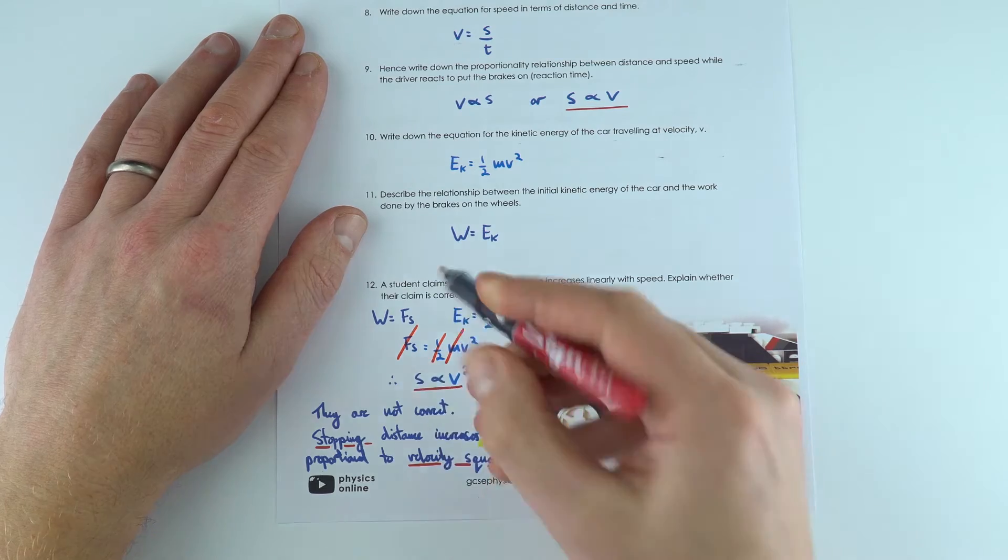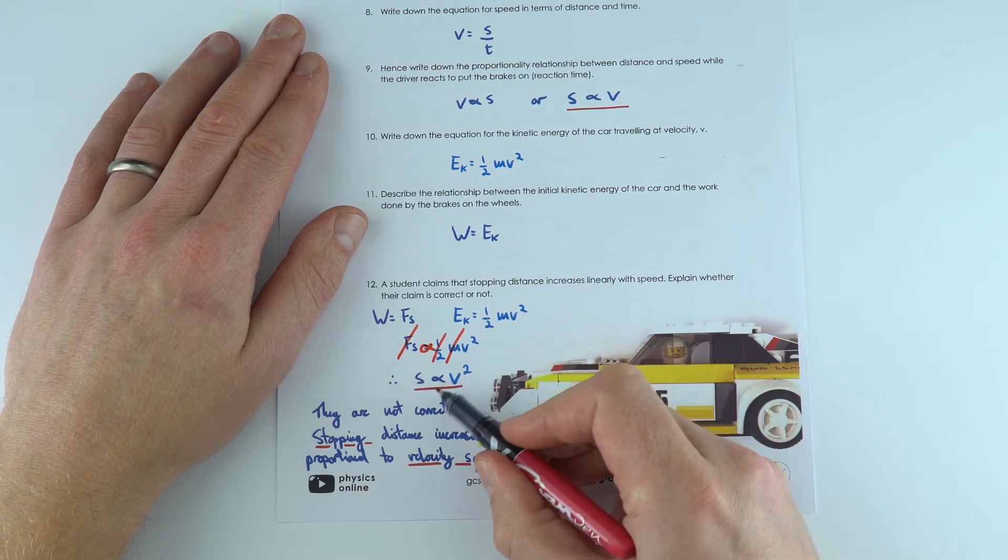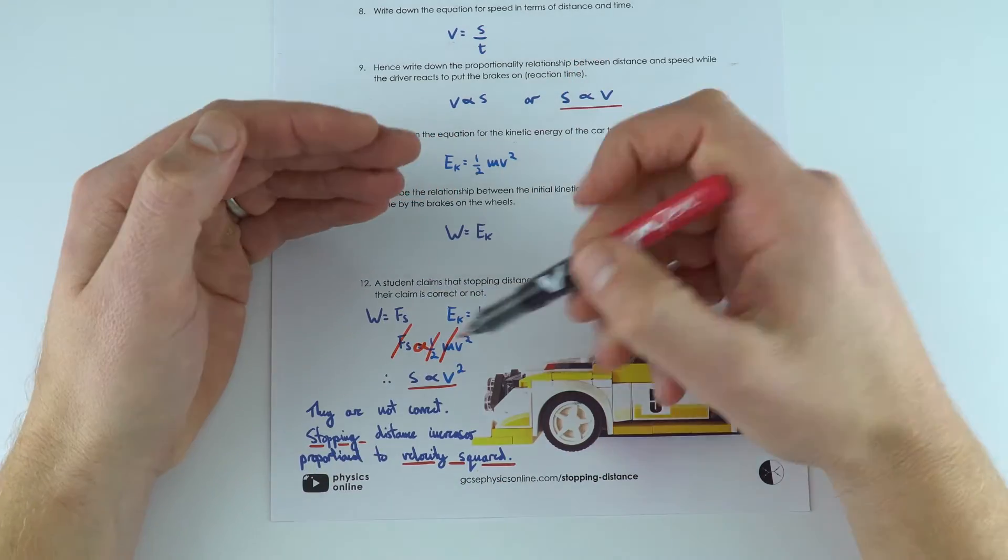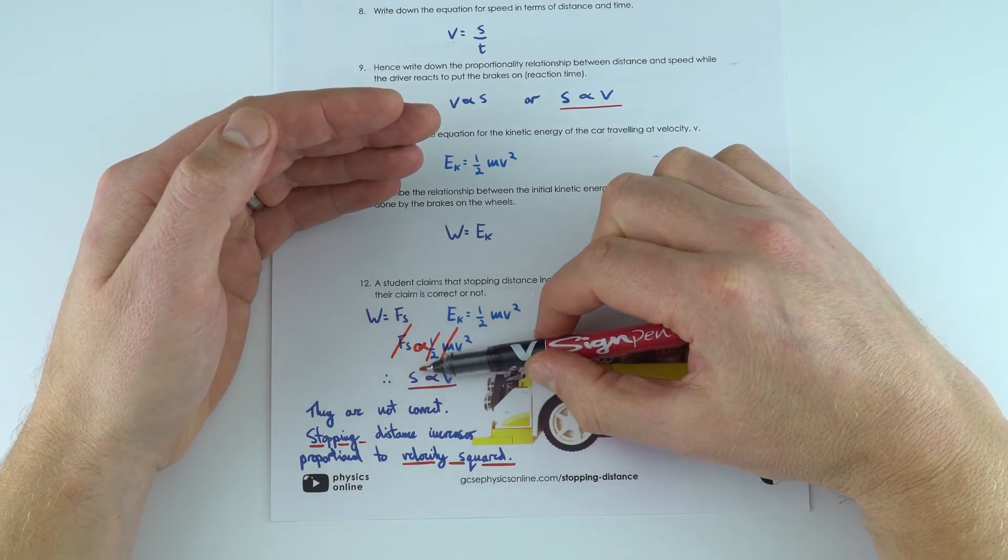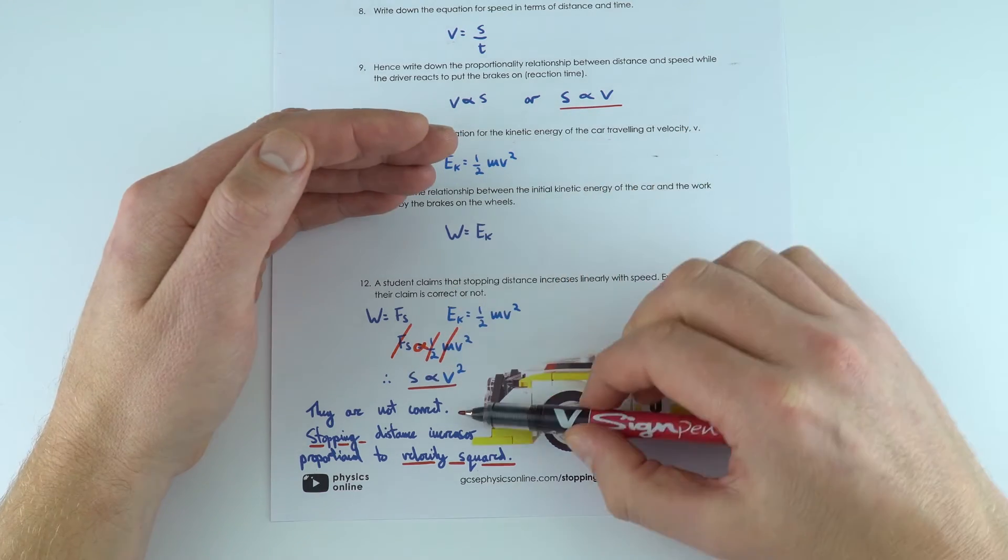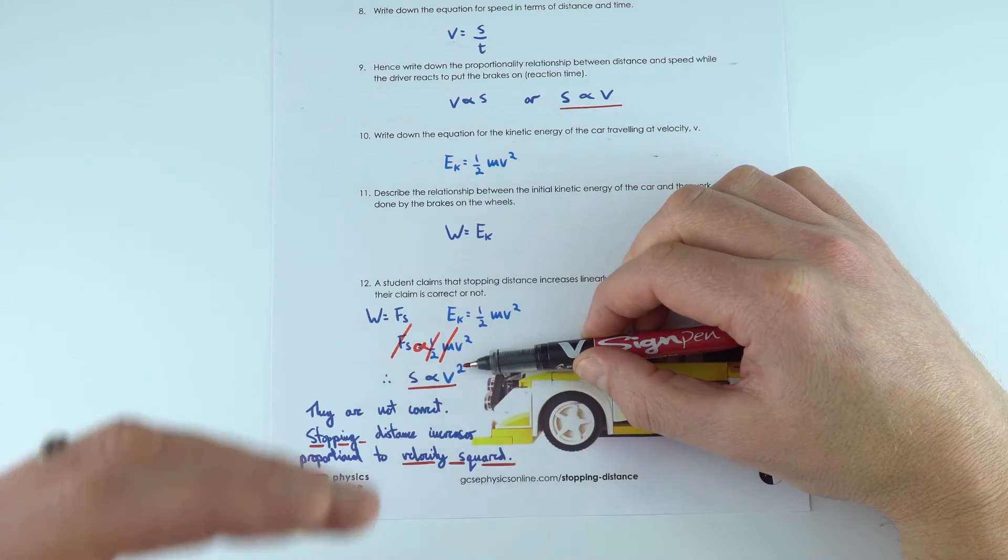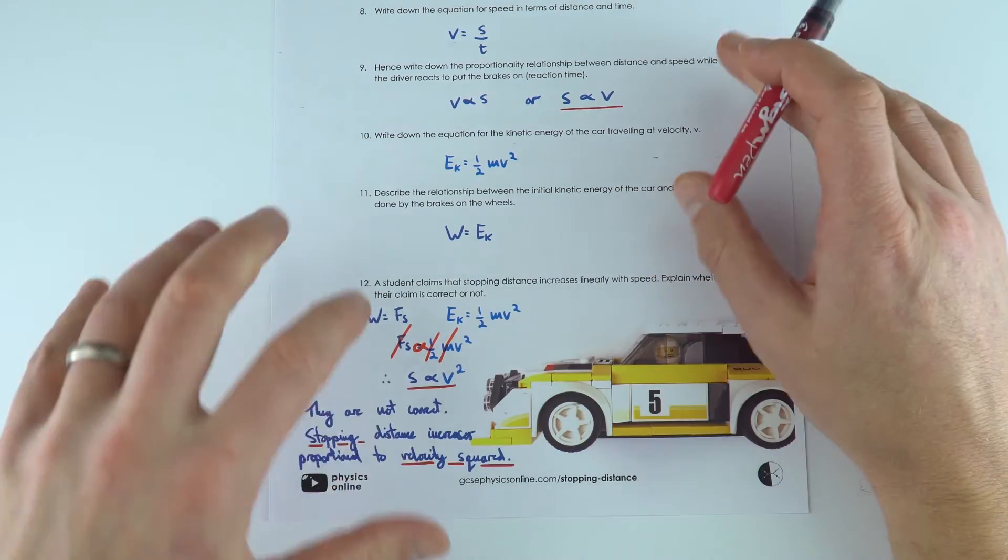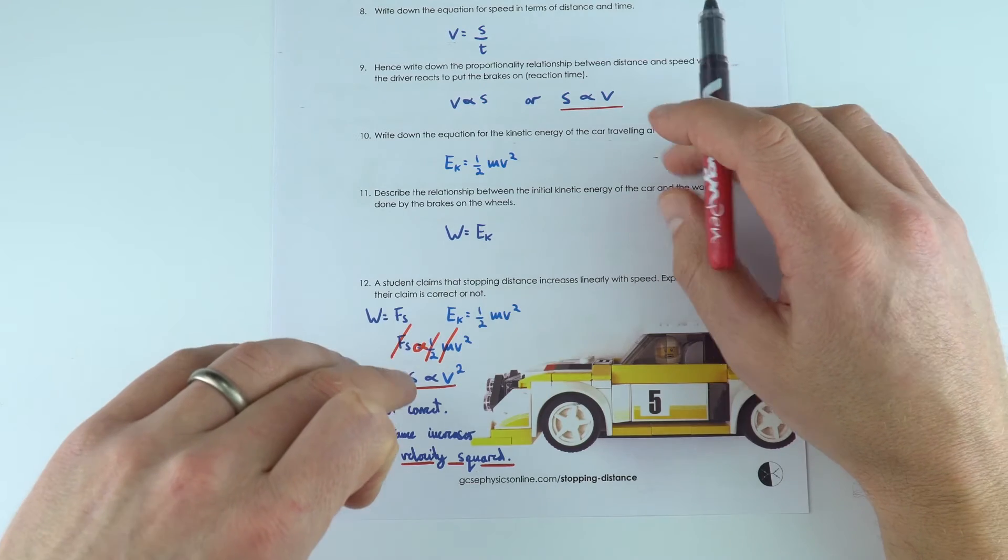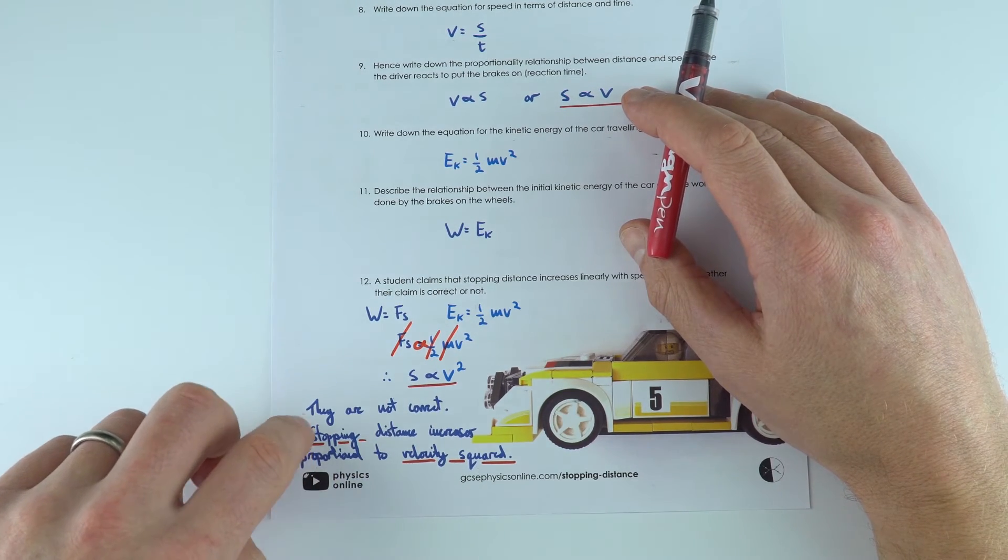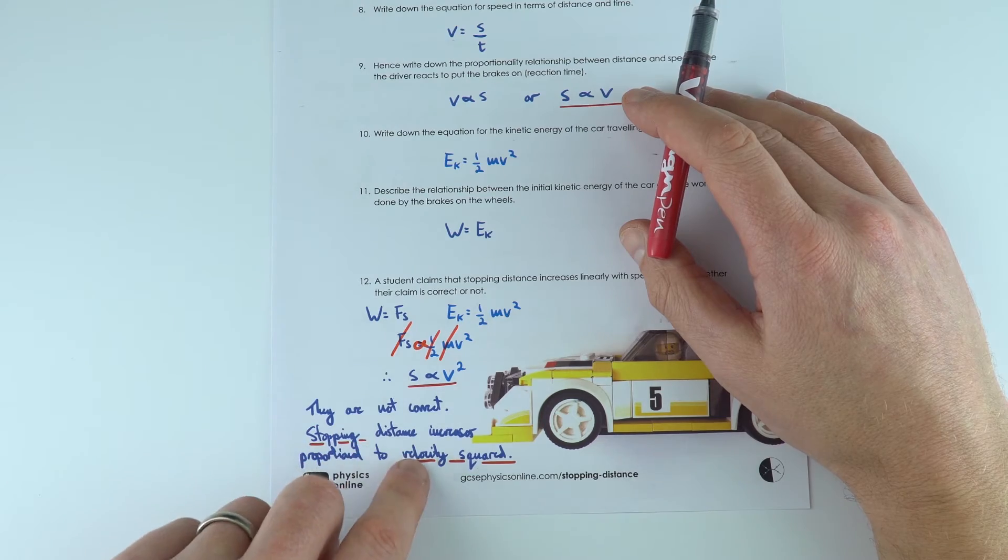So what that means is that if you were to go twice as fast, we would not just double the distance, the braking distance, we'd actually multiply it by 4. If you were going 10 times as fast, your braking distance would be 100 times bigger, 10 times 10. So that's not a proportional relationship, it's something where the stopping distance increases proportional to the velocity squared.